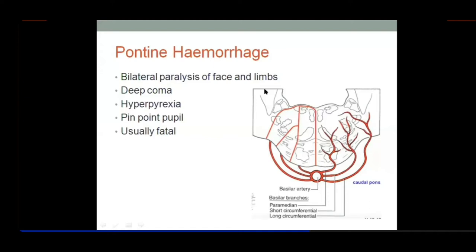Pontine hemorrhage is basically hemorrhage of the basilar artery. This causes bilateral loss of blood supply, resulting in bilateral paralysis — quadriplegia — because the pyramidal tract descends from the posterior limb of the internal capsule and has not yet decussated; decussation occurs at the lower medulla. So both upper and lower limbs on both sides are paralyzed. Deep in the pons, the abducens and facial nerve nuclei form the colliculus.